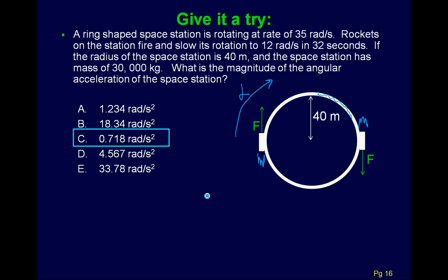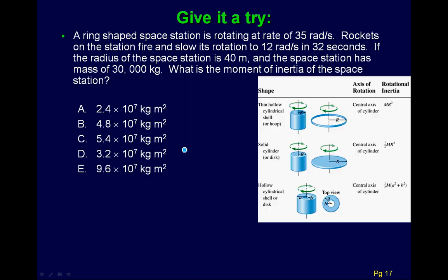Alright. This one we could have done a little while back. And so this answer is C. And basically it's taking one of our kinematic equations, this guy right here. So we know the initial and the final angular velocity and we know the time. And so alpha is just going to equal omega final minus omega initial divided by the time. And when you plug that in you get the 0.718 radians per second squared.